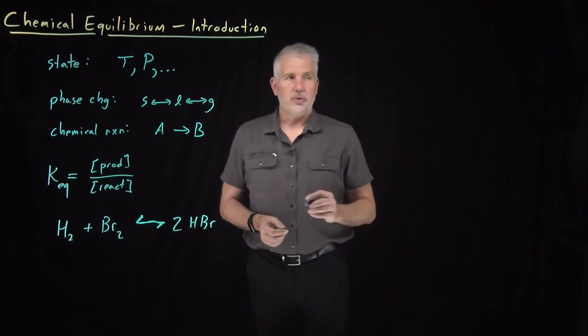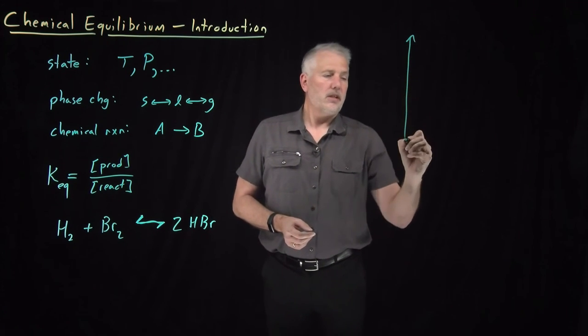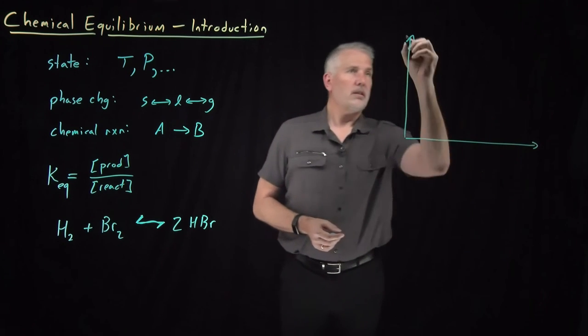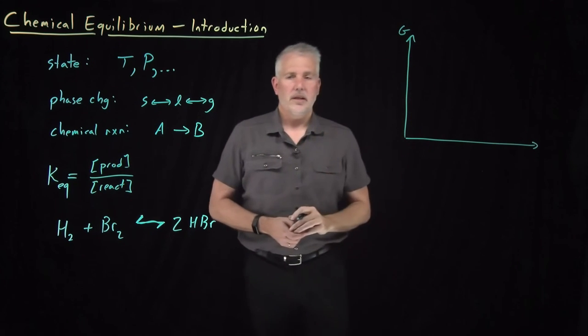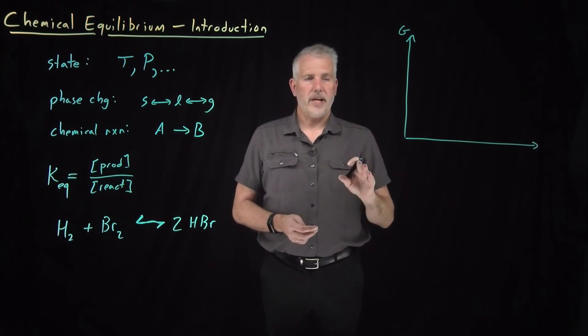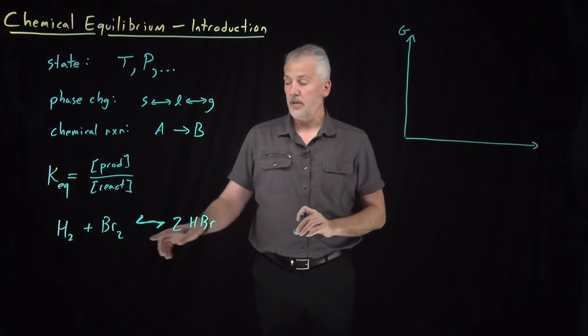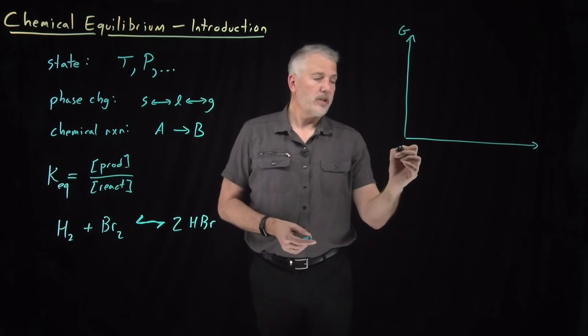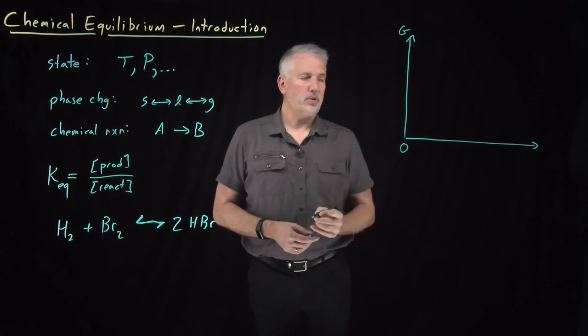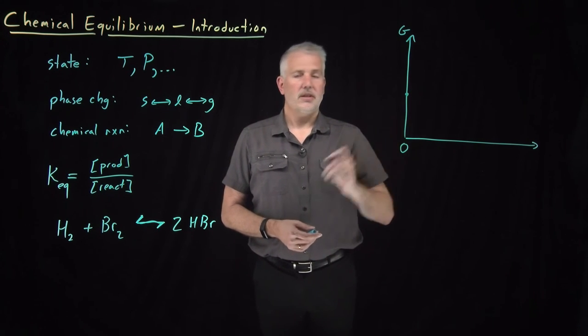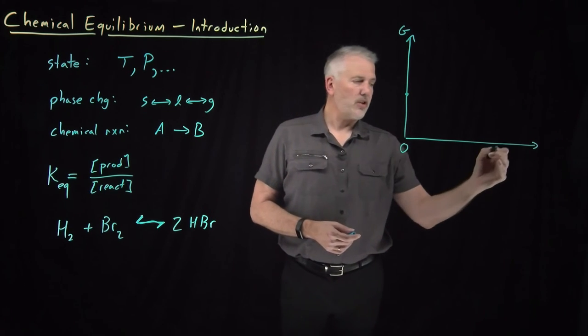So if we want to depict that visually, the language, for example, of saying that a reaction experiences a minimum in its free energy when it's at equilibrium, we can say, for example, if the reaction doesn't proceed at all, it has some free energy. If it proceeds all the way to completion, it has some different free energy.